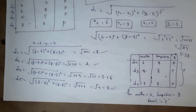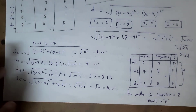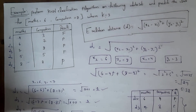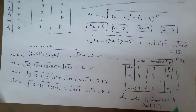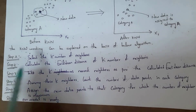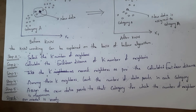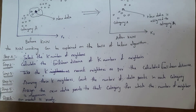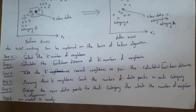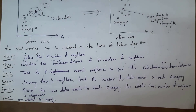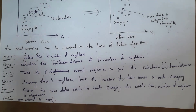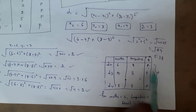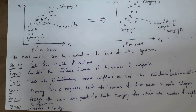The KNN algorithm steps are: Step 1 — select k number of neighbors. Step 2 — calculate Euclidean distance for each neighbor. Step 3 — select the k nearest neighbors based on smallest distances. Step 4 — assign the new data to the category based on majority vote. Step 5 — the model is ready. This is the KNN algorithm.